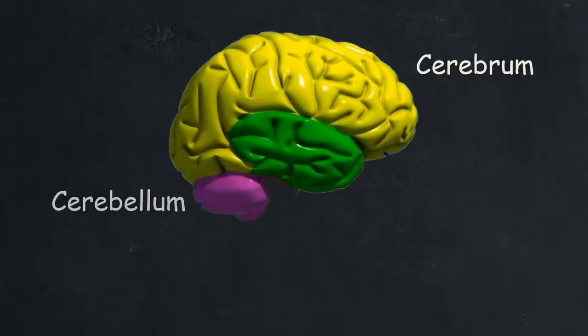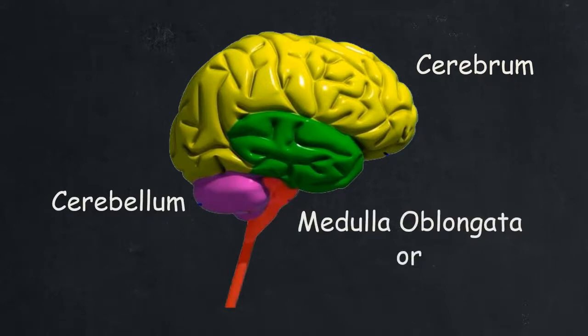There are three main parts of the brain: the cerebrum, cerebellum, and medulla oblongata, which is also known as medulla or brain stem.